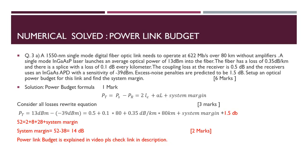The numerical is: a 1550 nm single mode digital fiber optic link needs to operate at 622 Mbps over 80 kilometers without an amplifier. A single mode indium gallium arsenide phosphate laser launches an average optical power of 13 dBm into the fiber. The fiber has a loss of 0.35 dB per kilometer, and there is a splice with a loss of 0.1 dB every kilometer. The coupling loss at the receiver is 0.5 dB, and the receiver uses an indium gallium arsenide APD with a sensitivity of minus 39 dBm.